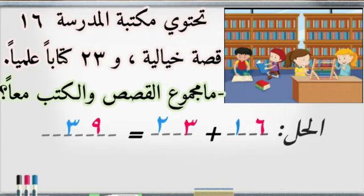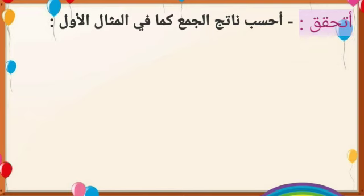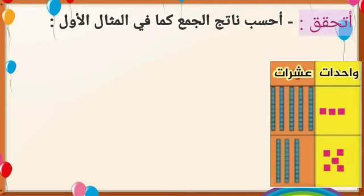أحسنتم يا صغاري الرائعين. إذن نقول لصديقنا غيث بأن مجموع القصص والكتب تسعة وثلاثون. الآن ننتقل إلى 'أتحقق': احسب ناتج الجمع كما في المثال.